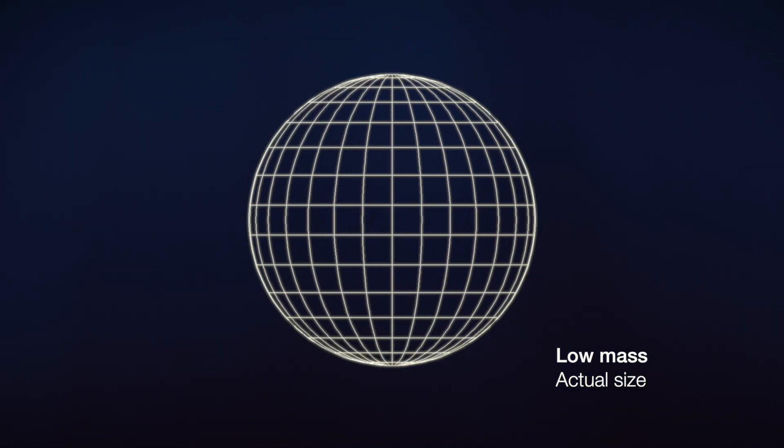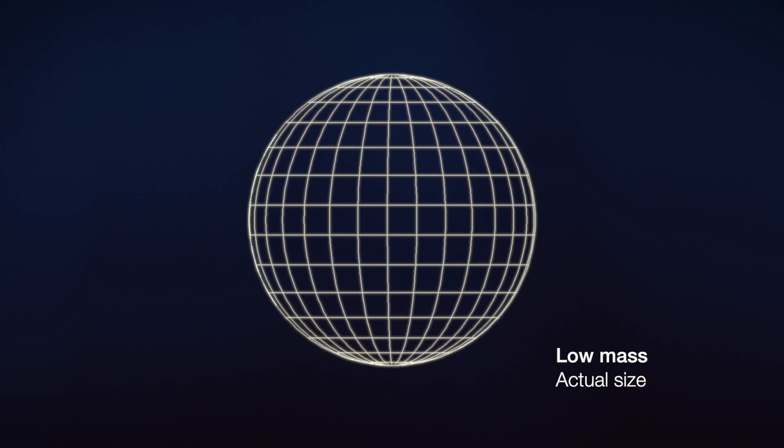This is a pulsar-sized object about 16 miles across, but with much less mass. We only see light from the side of the object nearest to Earth.